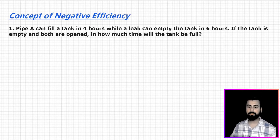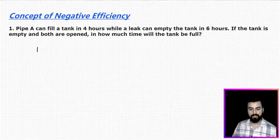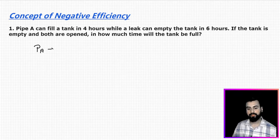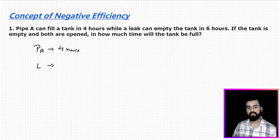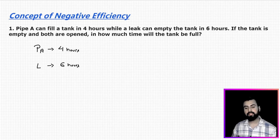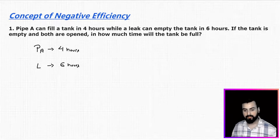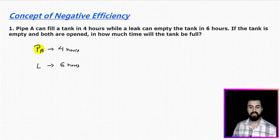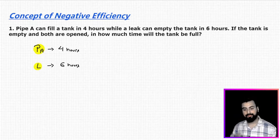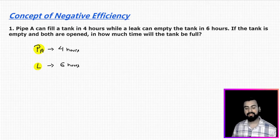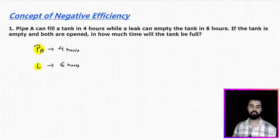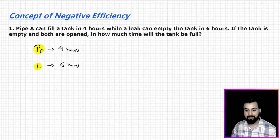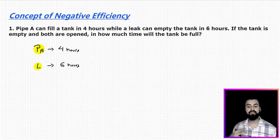Let me first write down the data. There is pipe A which can fill a tank in 4 hours, while there is a leak which can empty the same tank in 6 hours. This is the first time we are looking at a question with two entities — a pipe and a leak — working in different directions. The pipe is filling the tank but the leak is emptying it, so they are working in opposite directions. Therefore, for the first time we will deal with negative efficiency.